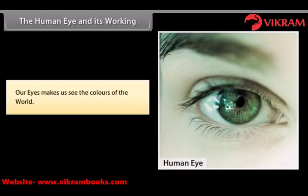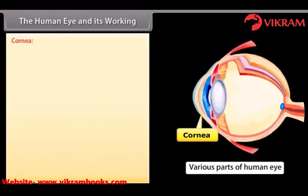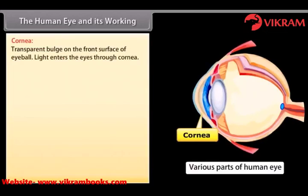Our eyes make us see the colors of the world. Human eye has a crystalline lens and it works like a camera. Various parts of the eye along with their functions are: Cornea — it is the transparent bulge on the front surface of eyeball. Light enters the eyes through the cornea.